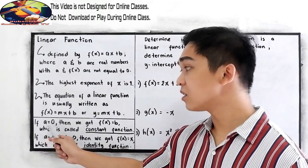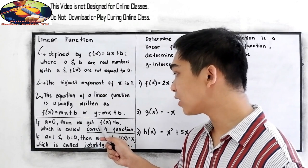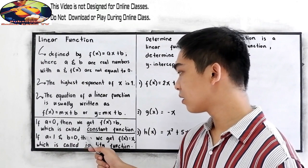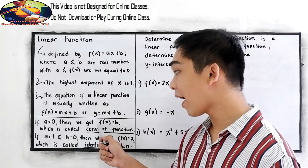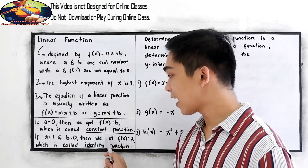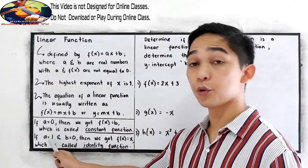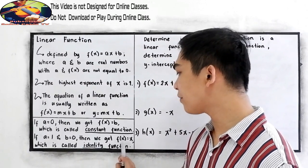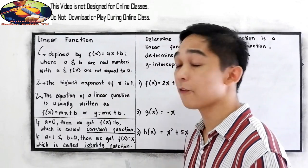Remember, if a is equal to 0, then we get f of x is equal to b, which is called the constant function. That can be f of x is equal to 5, or y is equal to 10. If a is equal to 1 and b is equal to 0, then we get f of x is equal to x, which is called the identity function.